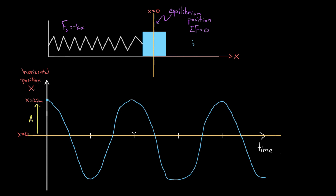That's one whole cycle. This is great, because now we can draw the variables we talked about earlier, like amplitude — because amplitude is the maximum magnitude of displacement from equilibrium, which would equal 0.2 meters.